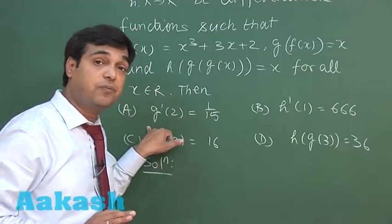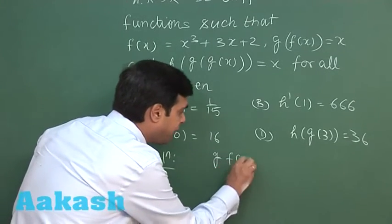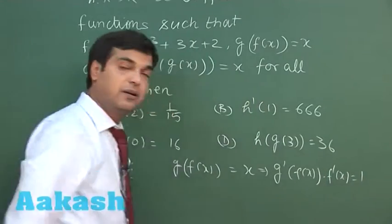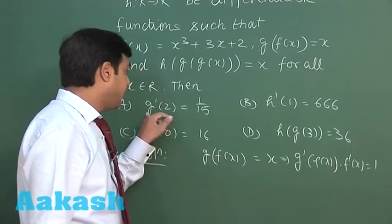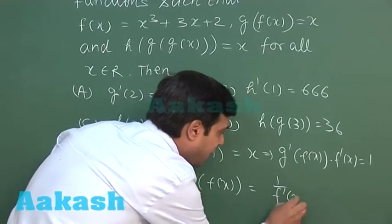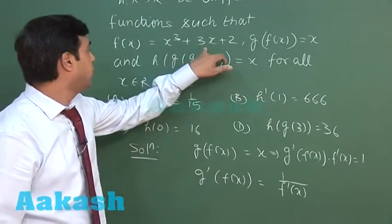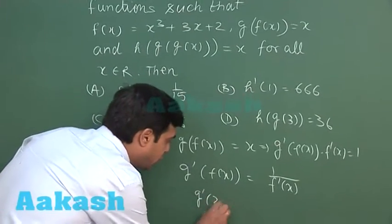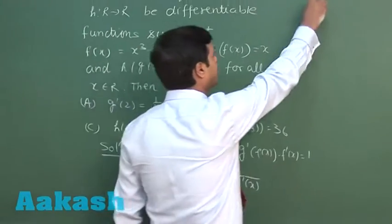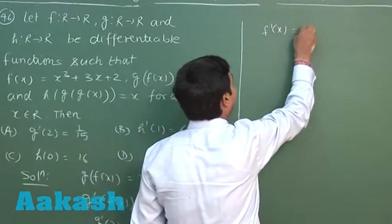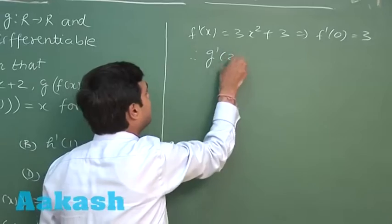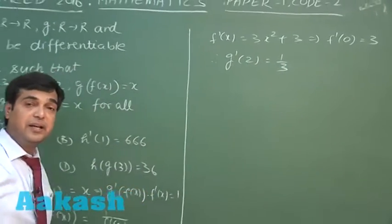Let us look at the first option which is about g'(2). Since g(f(x)) = x, differentiating gives g'(f(x)) · f'(x) = 1, so g'(f(x)) = 1 / f'(x). Putting x = 0 gives f(0) = 2, so g'(2) = 1 / f'(0). Since f'(x) = 3x² + 3, we get f'(0) = 3, therefore g'(2) = 1/3. So the first option is wrong.